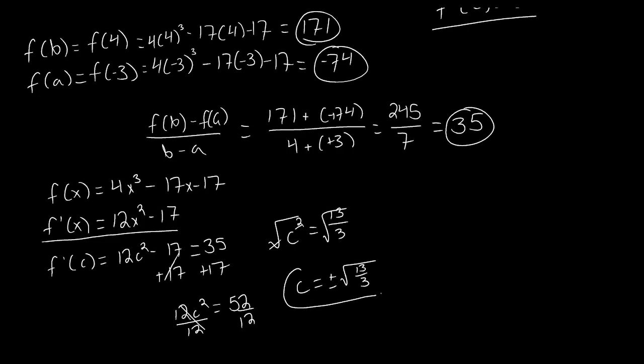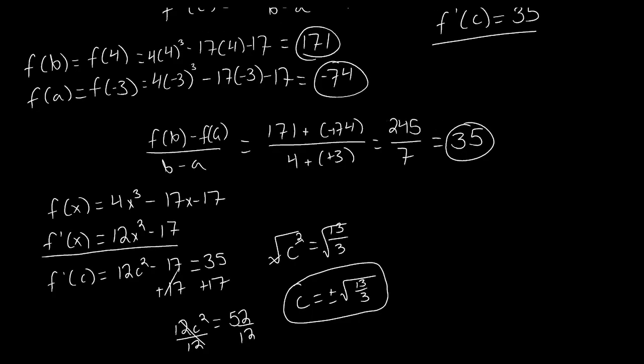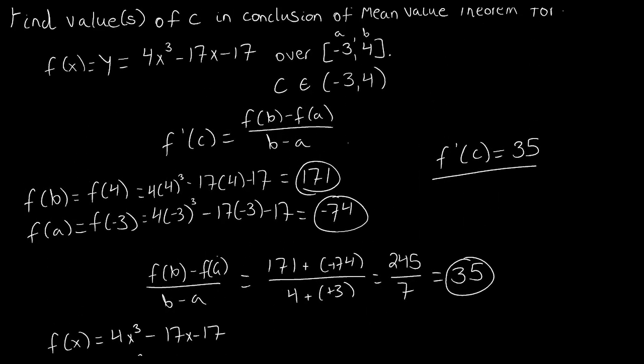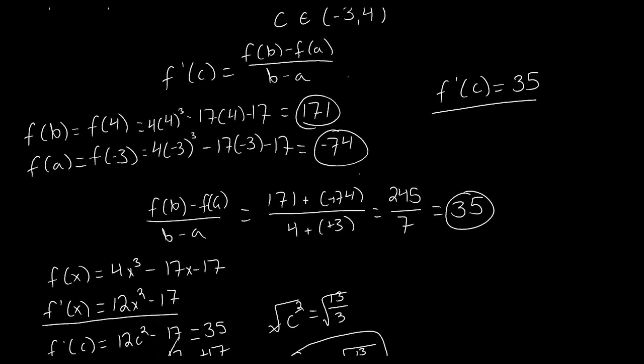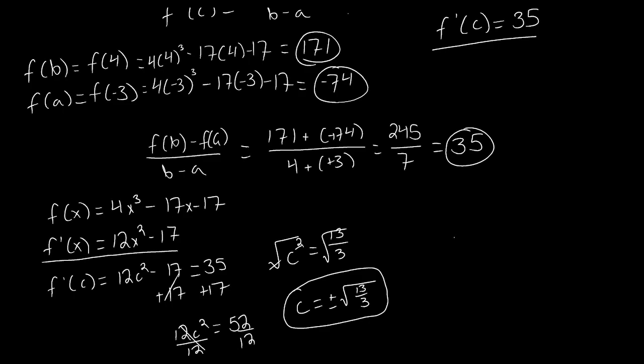So what we found right here is a value that makes this statement true. But remember, inside of the mean value theorem, we need to find a c value, at least one of them, because the theorem guarantees that there is at least one, there can be multiple. But we are looking for c values that belong inside of the interval -3 to 4. So keeping that in mind, we're going to ask ourselves, does c that we found belong in -3 to 4?